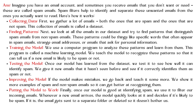Improving the model: if the model makes mistakes, we go back and teach it more by showing it additional examples of spam and non-spam emails. Putting the model to work: once our model is good at identifying spam, we use it to filter incoming emails. Whenever a new email arrives, the model quickly looks at it and decides if it's likely to be spam. If it is, the email gets sent to a separate folder or deleted so it doesn't bother us.